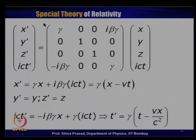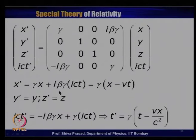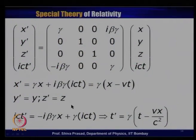Let us verify: x' must equal γ·x + iβγ·(ict). Since i² = -1 and β = v/c, this becomes γ(x - vt), which is the first equation of Lorentz transformation. For y' = y and z' = z, these are also part of Lorentz transformation.